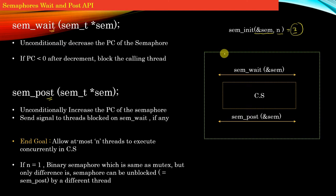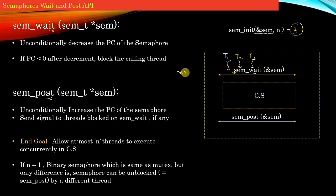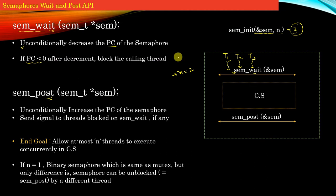Suppose in the process we have 3 threads — t1, t2, and t3 — coming towards executing the critical section. Before entering, they encounter sem_wait. When t1 executes sem_wait first, the value of the semaphore reduces from 3 to 2. The rule says: unconditionally decrease the permit counter value. Since the permit counter is not less than 0, t1 is able to enter and execute in the critical section. When t2 then executes sem_wait, the value decreases from 2 to 1, and t2 also enters the critical section.